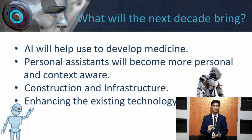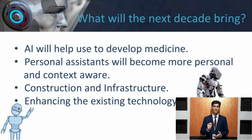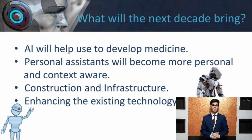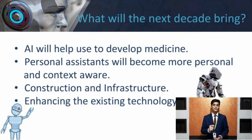Our next slide is about what will the next decade bring. First point: AI will help to develop medicines. AI is going to take medicine to a whole different level. IBM is working on AI applications for chronic disease treatment, and companies like Google and Intel are working on data collection software for specific medical research. Our next point is construction and infrastructure. AI can replace a lot of hazardous manual work in the construction industry. Some developers have created 3D models for planning and designing buildings, which are not widely used now but will surely grow in future.